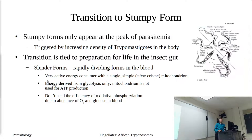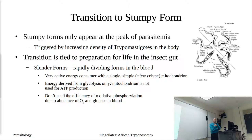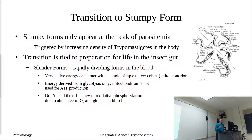The stumpy form only appears at the peak of parasitemia — the peak where we have the highest number of trypomastigotes circulating in the blood. That transition seems to be triggered by increasing density in the body. To better understand this, let's look at the biochemical and metabolic pathways taking place in our trypanosome — comparing the slender form to the stumpy form.